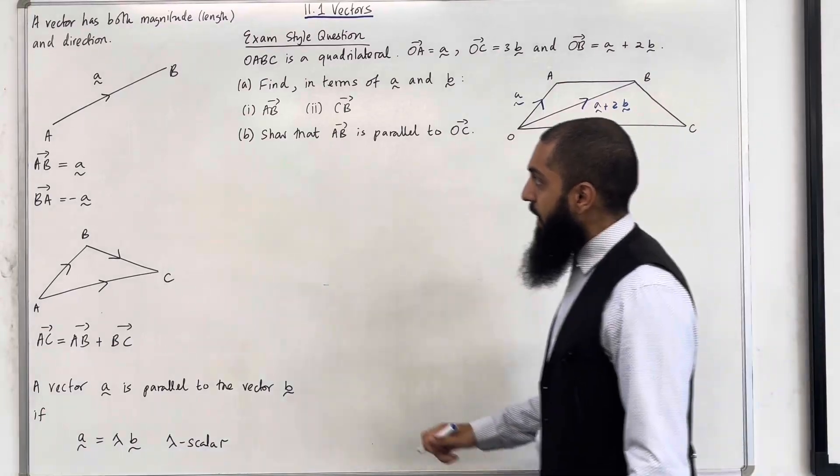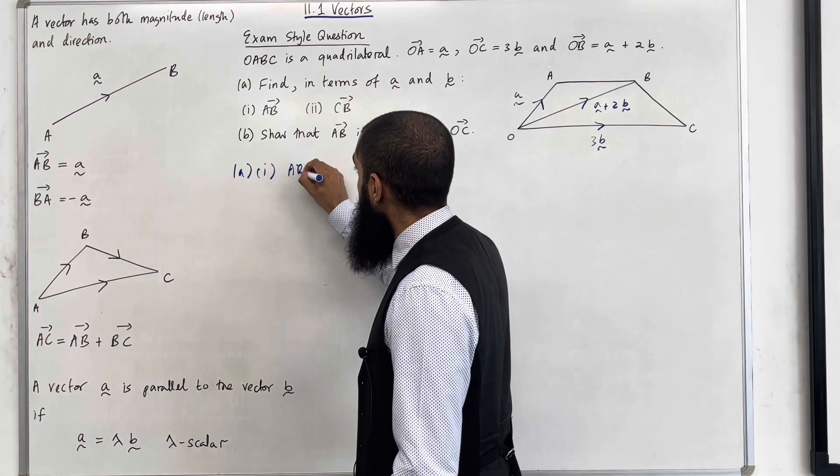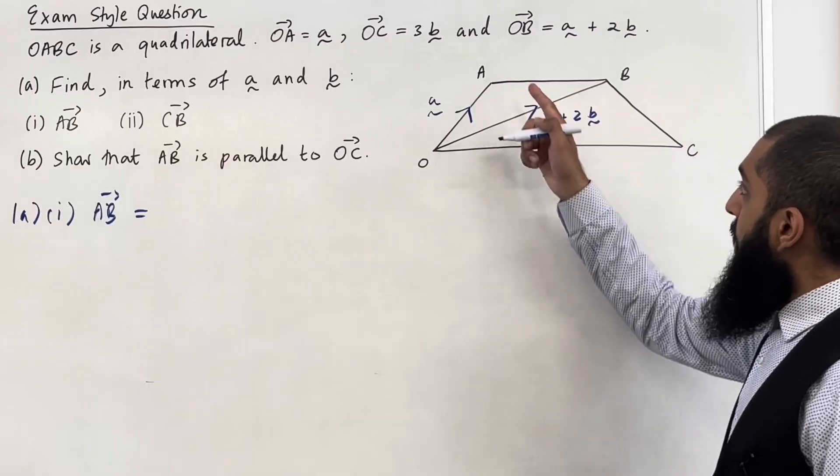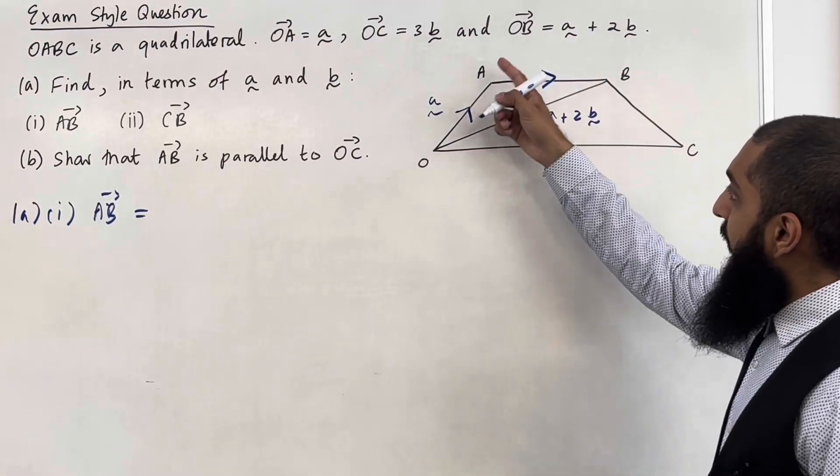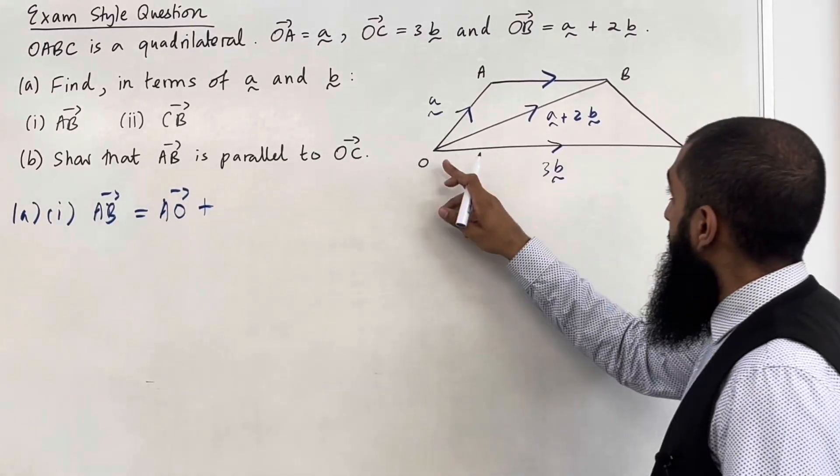Now let's have a look at part A, part 1. So we want to work out the vector A to B. So A to B, if I draw the direction, is given by A to O plus O to B.